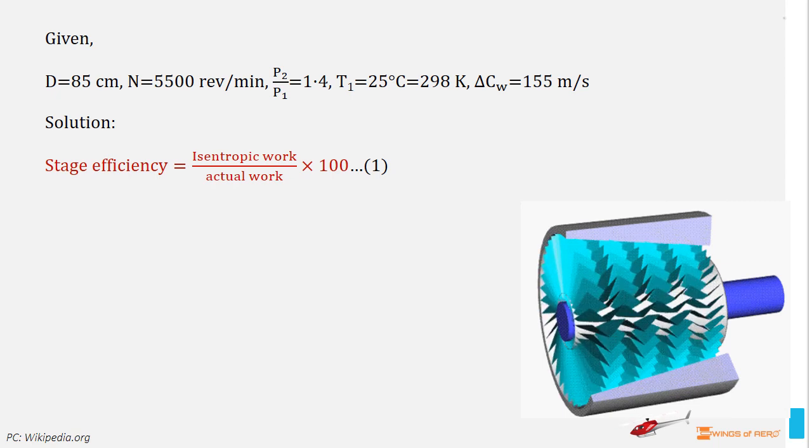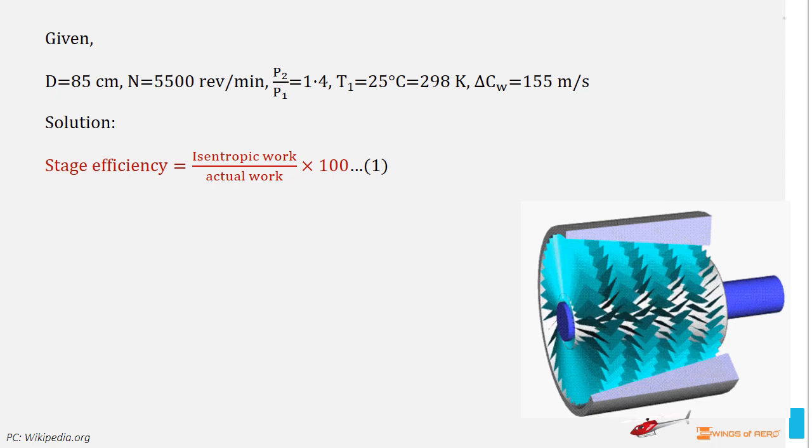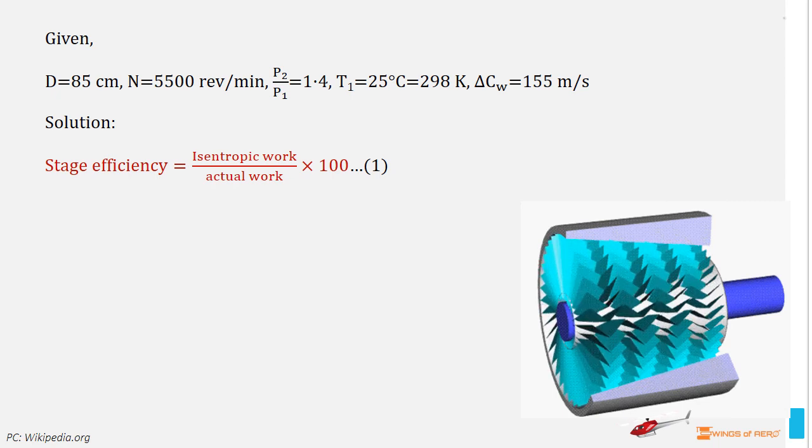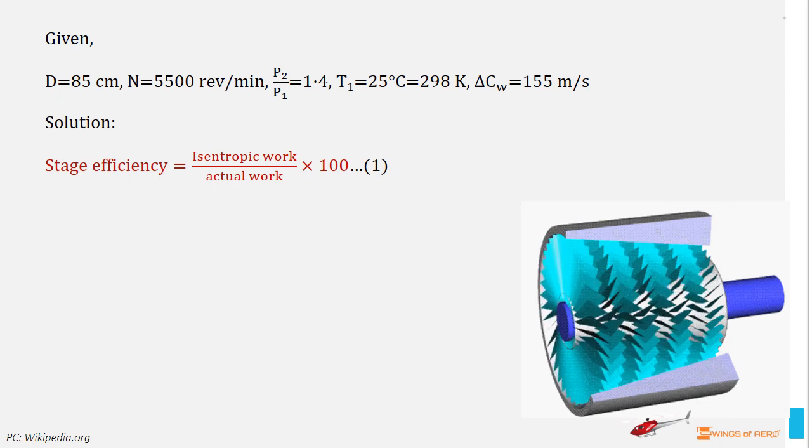And stage efficiency is indirectly proportional to the actual work. So write, stage efficiency is equal to isentropic work divided by actual work into 100. Here, isentropic work and actual work are not given. So, first find isentropic work.